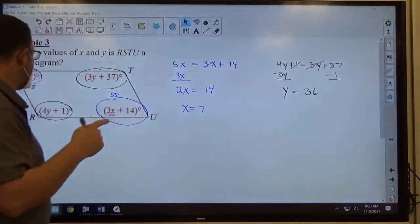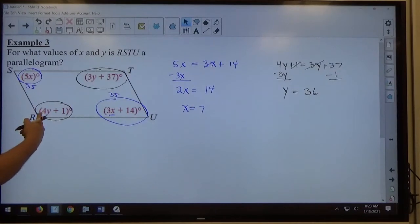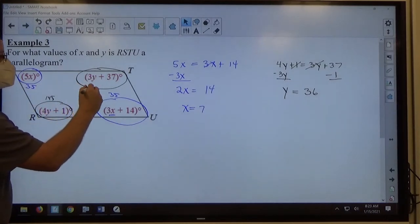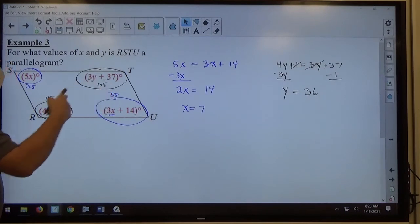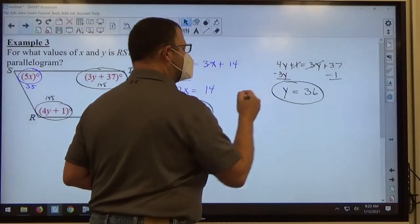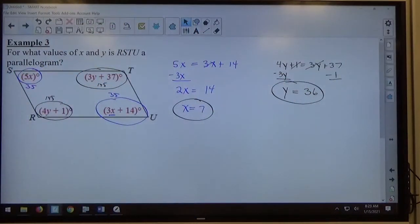Again, do a quick check, 4 times 36 is 144 plus 1 is 145. And 3 times 36 is 108 plus 37 is 145. So those are congruent when y equals 36, these are congruent when x equals 7, so my answers are x equals 7 and y equals 36 will ensure that we have a parallelogram.